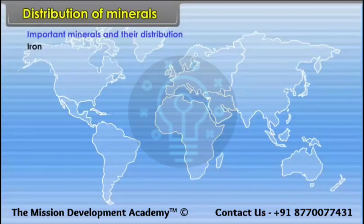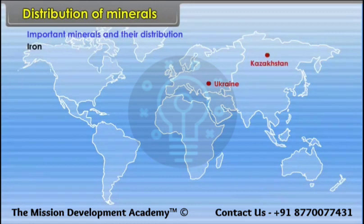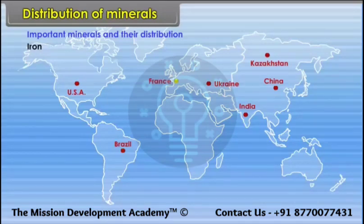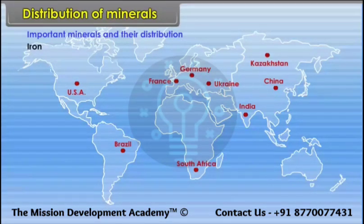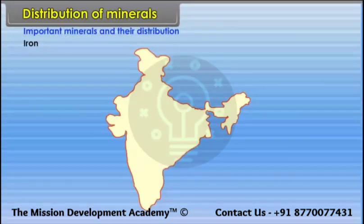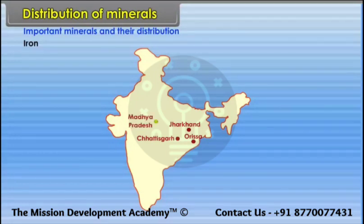Location of iron ore — World: Ukraine, Kazakhstan, USA, China, India, Brazil, France, Germany, South Africa, etc. In India: Jharkhand, Orissa, Chhattisgarh and Madhya Pradesh.